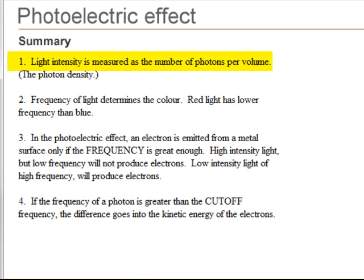In summary, light intensity is proportional to the number of photons. The frequency of light determines its color, and we have to be above the threshold frequency to overcome the binding energy of the electrons to the metal, so that photoelectrons can indeed be produced. As the frequency of light increases, the excess light energy goes into the kinetic energy of the photoelectrons.